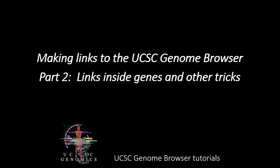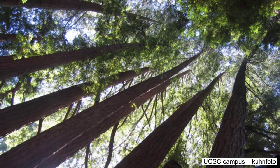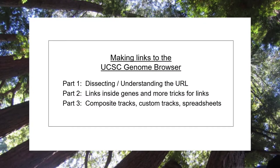Welcome to Part 2 of the video series showing how to make links to the UCSC Genome Browser. In the first installment of this series, we saw how to pick apart the UCSC browser URL, how to turn on specific tracks of interest and control their visibility level, how to hide undesired tracks, and how to navigate to locations in the genome using gene names or dbSNP identifiers.